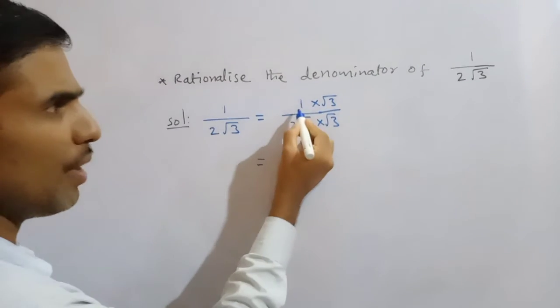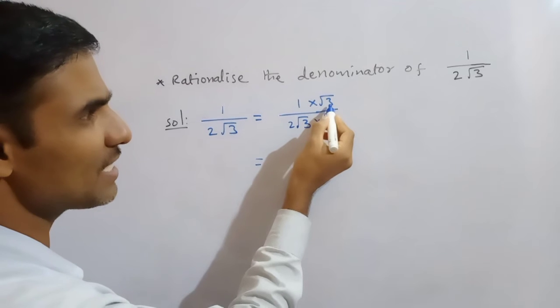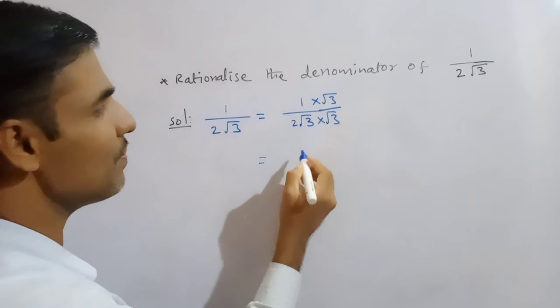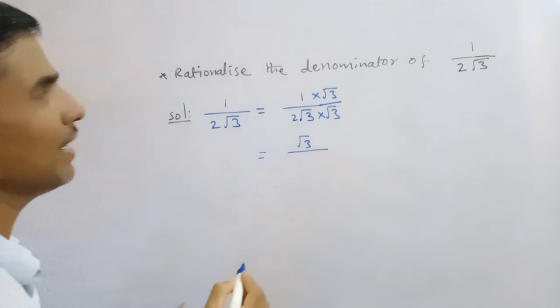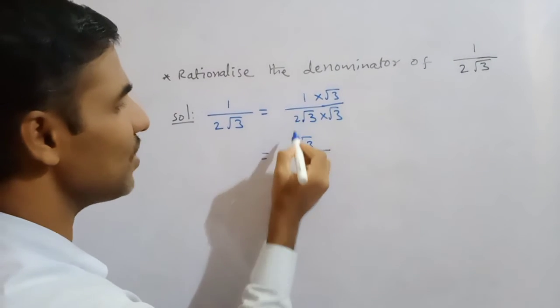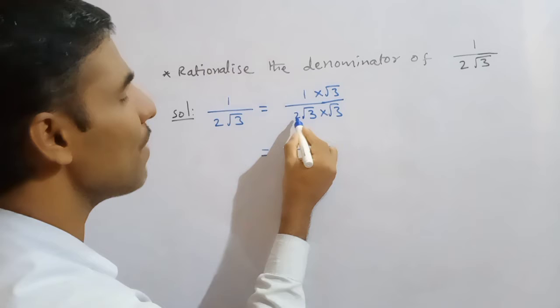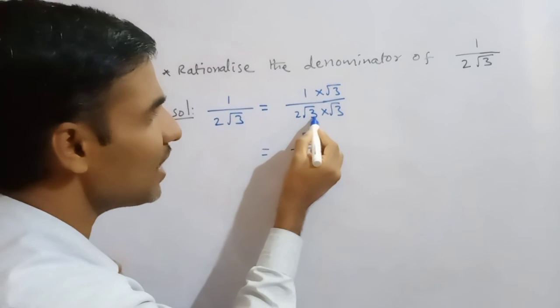Now, multiply with 1 means we will get the same number. So 1 into root 3 means we are getting root 3 divided by, now here, 2 aside will come. Why means here? Don't multiply rational and irrational number.